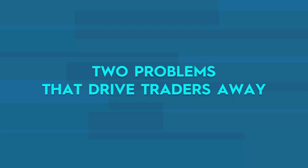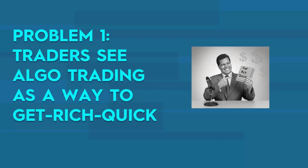Problem number one: traders see algo trading as a way to get rich quick. They think they'll put a robot onto their account and be super rich in a month. That is very, very wrong. People mistake forex robots for what they're not — they are not a get-rich-quick scheme. They won't magically make you money. Forex robots are just a convenience thing. You've done the analysis, recognized the patterns, come up with a trading strategy — you can do that manually or you can program it into a forex robot.